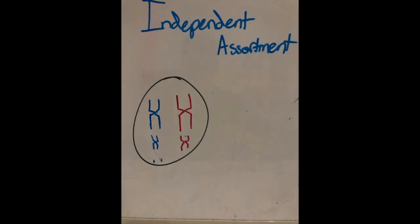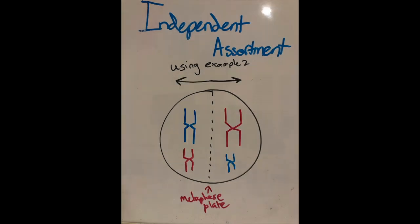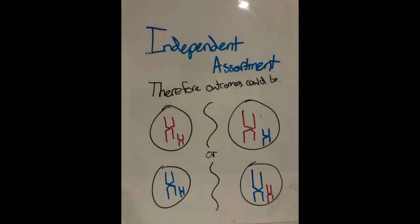Independent assortment is the random alignment of homologous chromosomes during metaphase 1 and results in variation between the daughter cell chromosomes when pulled apart in telophase 1.